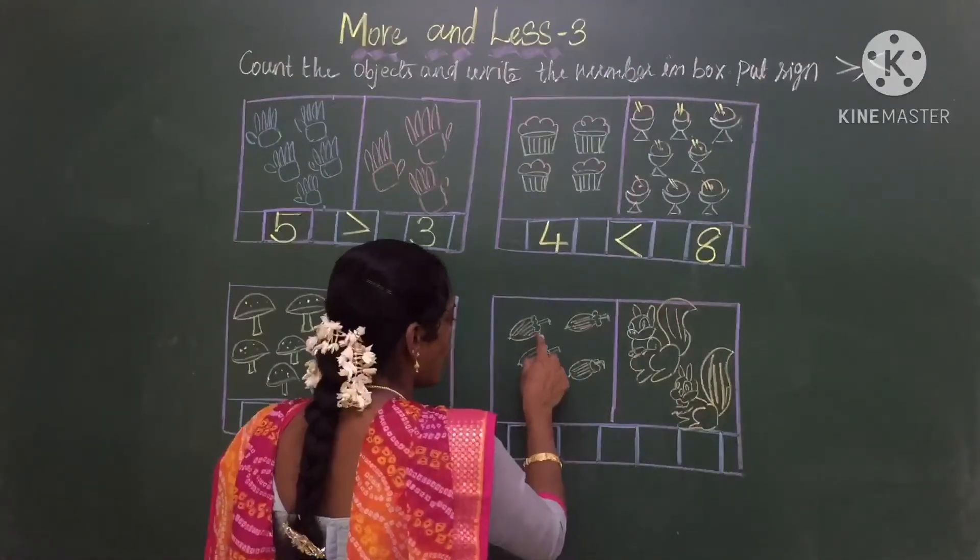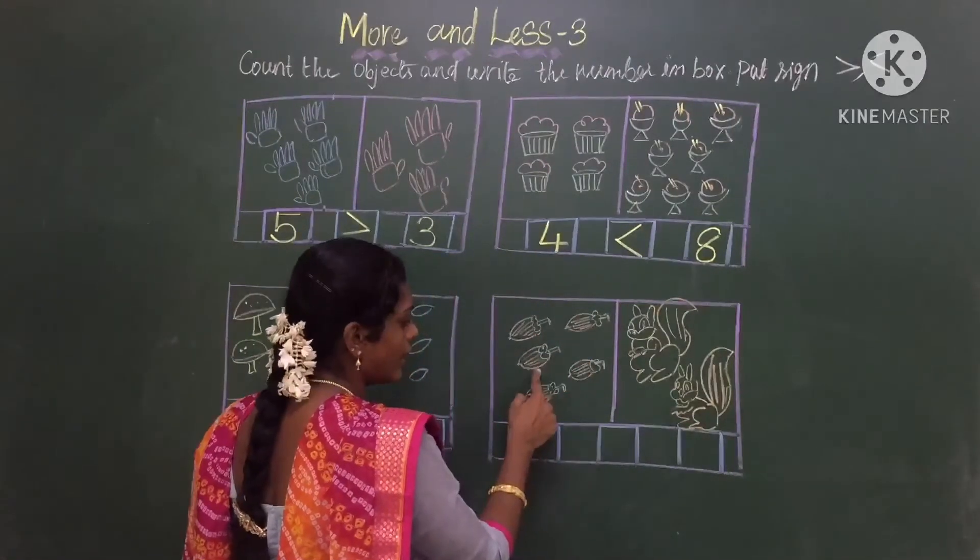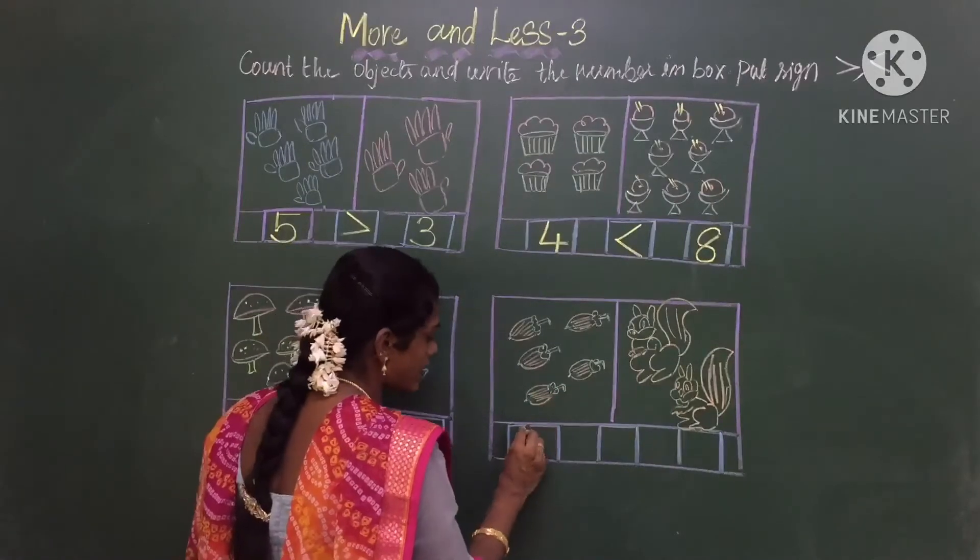Now next we will count the fruit: 1, 2, 3, 4, 5. So how much fruit is there? 5.